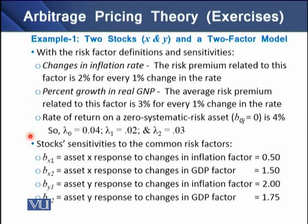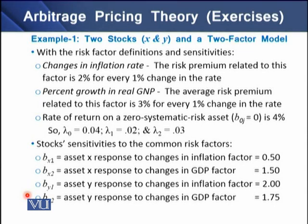As for the stock sensitivities to the common risk factors: beta X1, asset X's response to changes in the inflation factor, is 0.5; beta X2, asset X's response to changes in the GDP factor, is 1.5. For beta Y1, asset Y's response to the inflation factor is 2; and beta Y2, asset Y's response to the GDP factor, is 1.75.